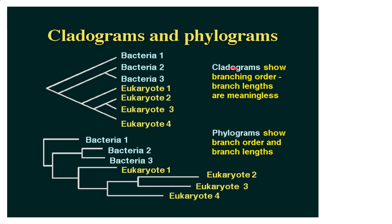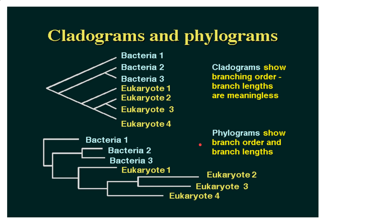Let's get into the difference between cladograms and phylograms, or phylogenetic trees. For cladograms, the length of the branches has no significance — it's just showing relation. So two organisms are going to be more related to each other than they are to a different branch. However, when you see phylogenetic trees with different branch lengths, the length does matter — it shows how long they were sharing a common ancestor before a branch occurred.